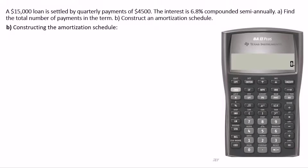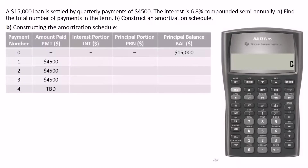In part B, we will be constructing an amortization schedule. An amortization schedule is a detailed table that breaks down each loan repayment into its interest and principal portions. It also shows the amount of principal balance after each payment is made. First we will create a table and then use the calculator's amortization worksheet to find the values and fill in the table.